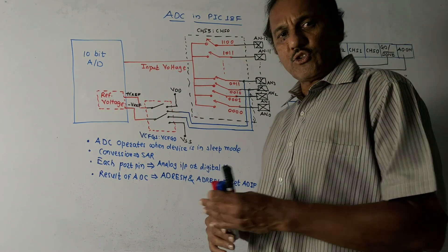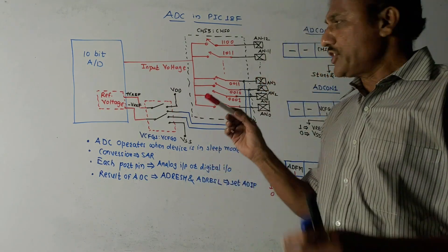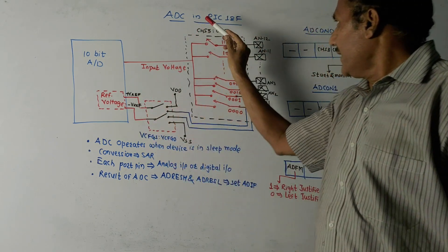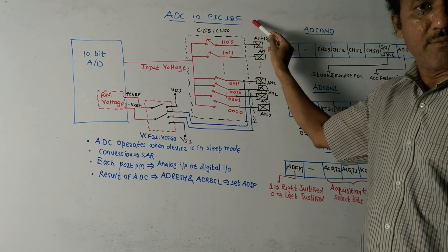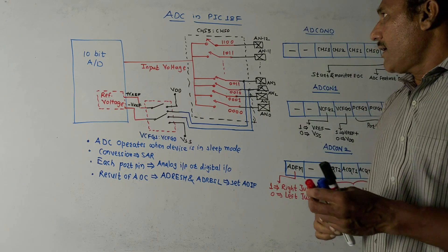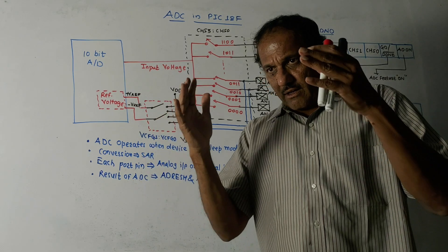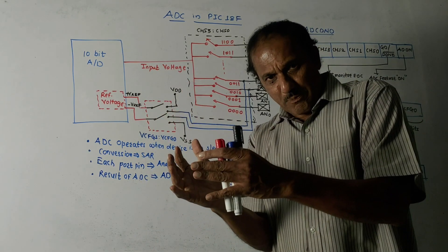Hello and welcome back to this channel. Dear students, this topic is ADC, that is analog to digital converter in PIC 18F microcontroller. As the name indicates, it is analog to digital conversion. If you are selecting any input which is analog in nature, you cannot directly apply to the microcontroller. We need to convert it into digital form.